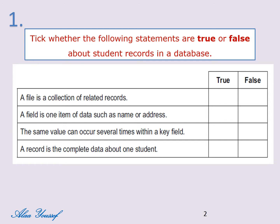The answers: a file is a collection of related records — true. A field is one item of data such as name or address — true. The same value can occur several times within a key field — false. A key field is used to uniquely identify each individual record, so the value of a key field may only occur once. A record is complete data about one student — true.